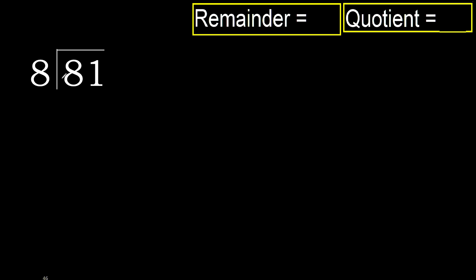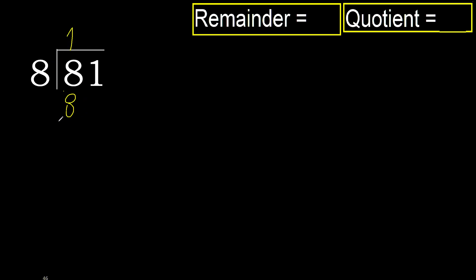81 divided by 8. 8 is not less, therefore with 8 — 8 multiplied by which number is nearest to 8, but not greater? 8 multiplied by 2 is 16, which is greater. Multiplied by 1 is 8, which is not greater.